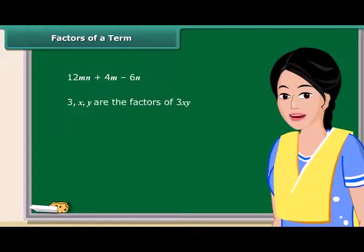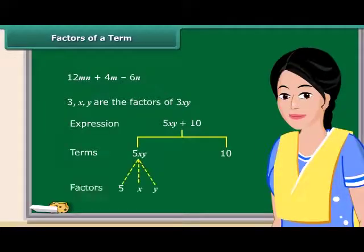Do you know, we can also represent 5XY plus 10 by a tree diagram. See, the dotted lines are used here for factors and continuous lines for terms. Remember, the factors cannot be further factorized.